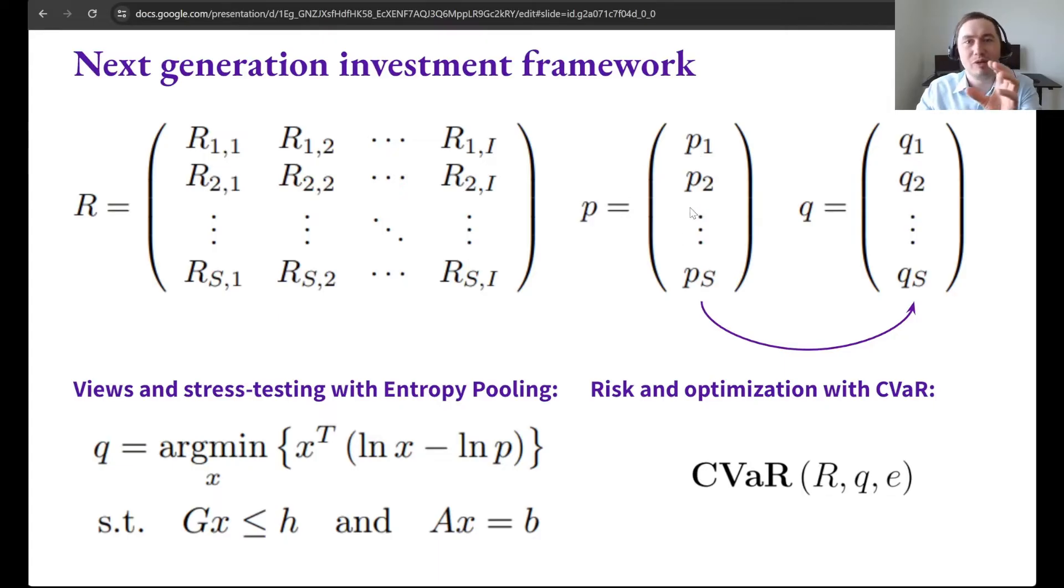We collect these probabilities into a prior probability vector called p. If we then want to perform discretionary views or stress testing, we adjust these scenario probabilities into the posterior probability vector called q.